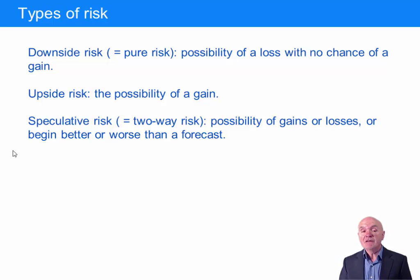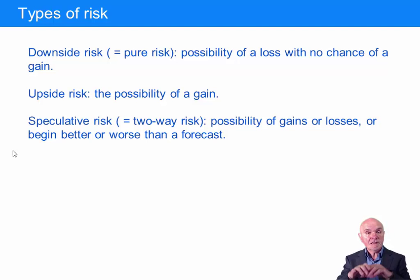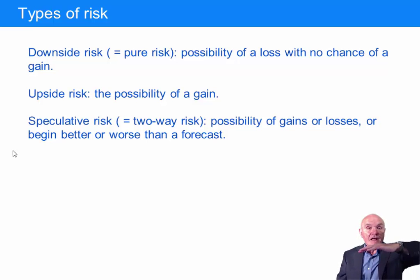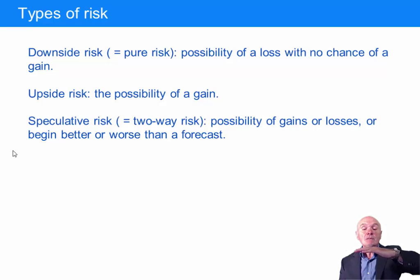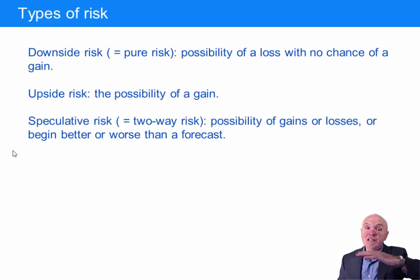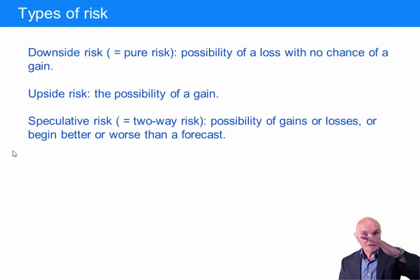Strictly speaking, there's also upside risk, where there's a possibility of a gain. When you talk about risk in a generic sense, it means that things could go either way — there's a chance things go well, or a chance things go badly. But pure risk is when only things can go badly.